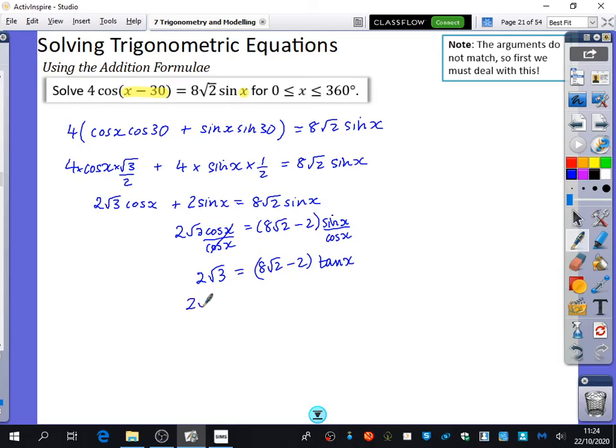So doing a bit of dividing through here. That is equal to tan x. And so x is the inverse tan of this. I'm just going to save myself a bit of time. So I'm going to do 2√3 divided by 8√2 minus 2, and I'm going to do the inverse tan of this. And your calculator must be in degrees mode, because it's asking for it between 0 and 360 degrees.